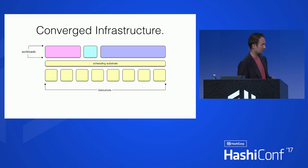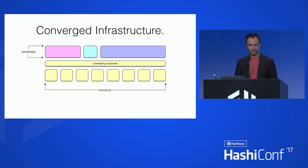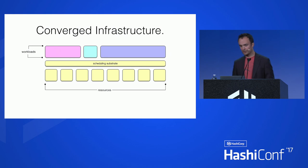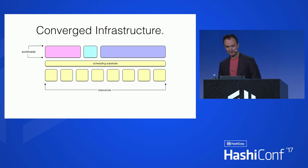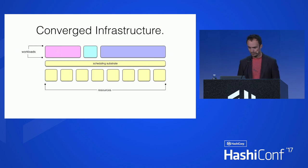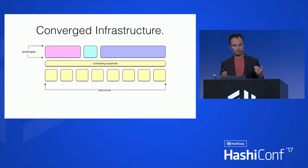If we imagine what that looks like: all the yellow squares would be our machines, and we have a scheduling substrate. Nomad would be one example; Mesos would be another; Kubernetes is another — there are many different products. The point is you're decoupling the people who own the data center from those who operate workloads on top of it.